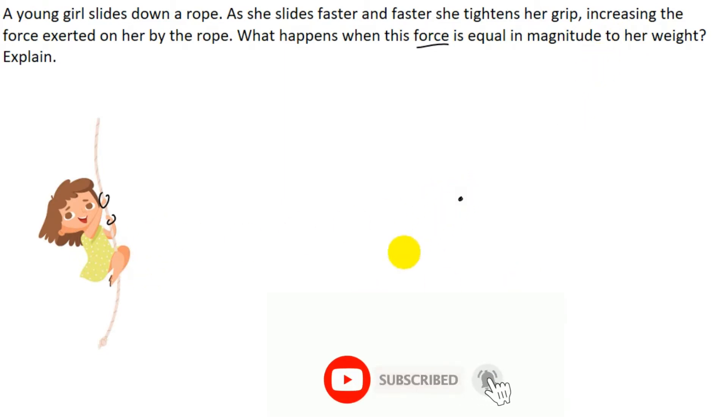If you draw the free body diagram for the girl, the weight force W acts in the vertical downward direction, and the force exerted by the rope F acts in the vertically upward direction. When these two forces are equal, the net force on the girl is zero, meaning the girl will move with constant velocity.